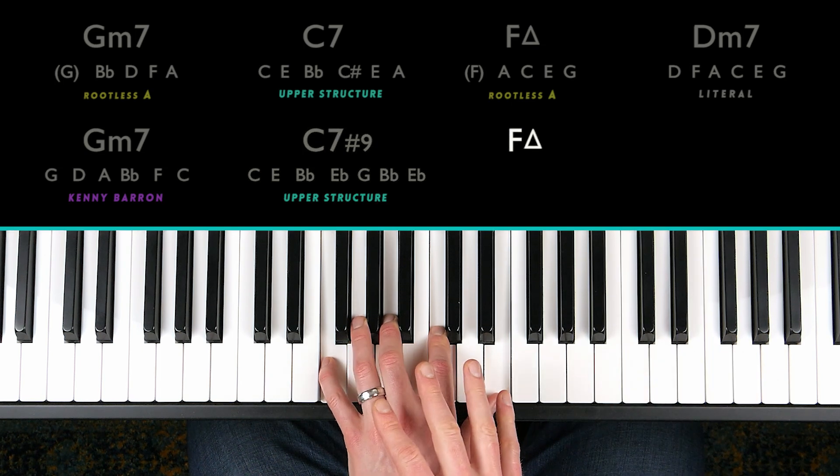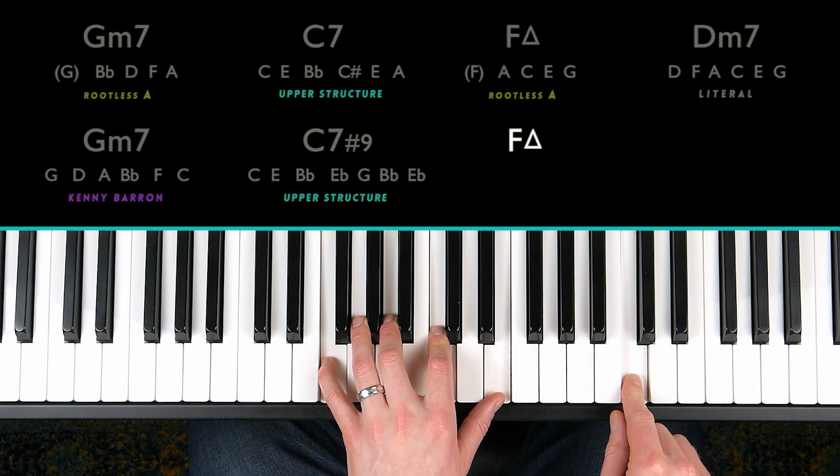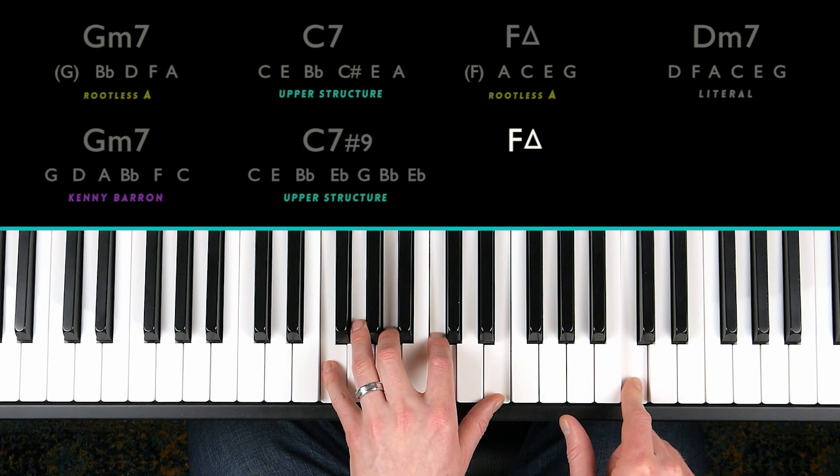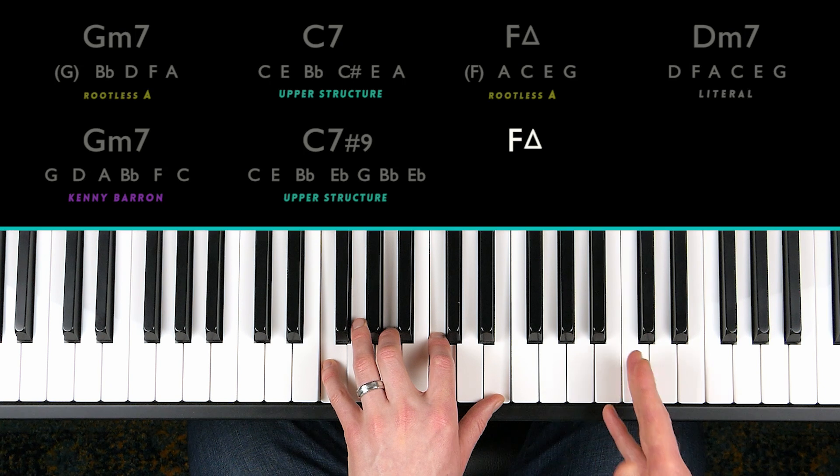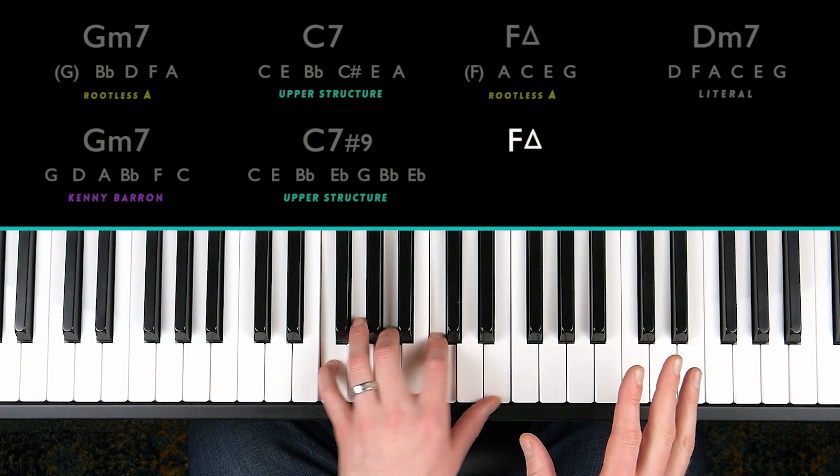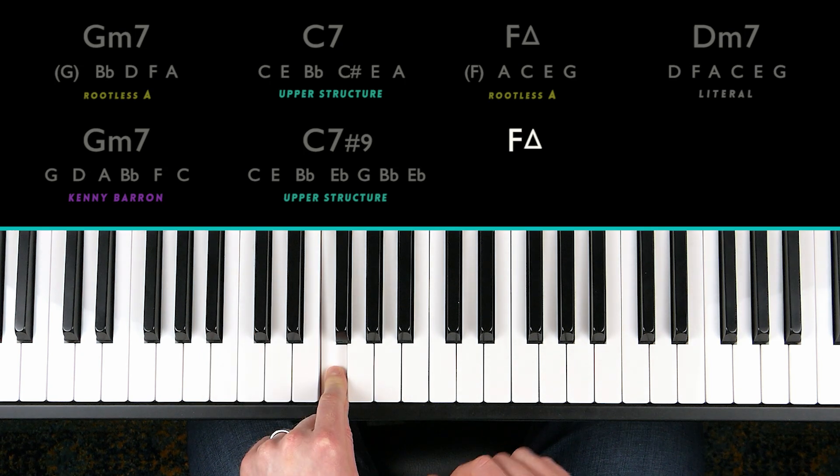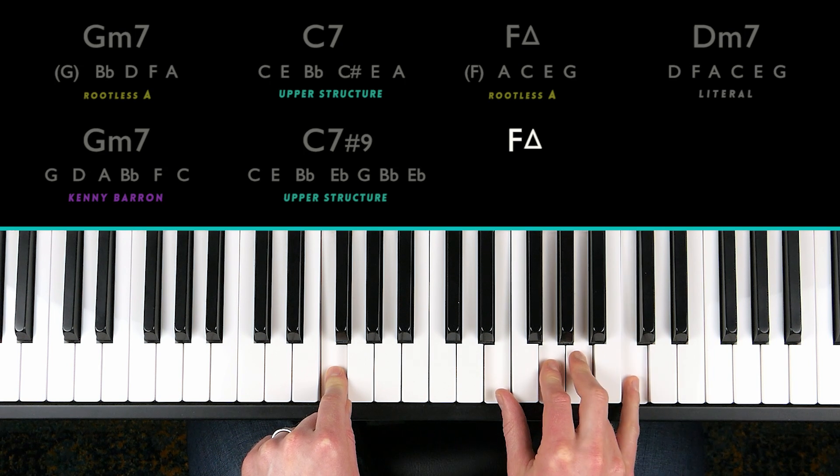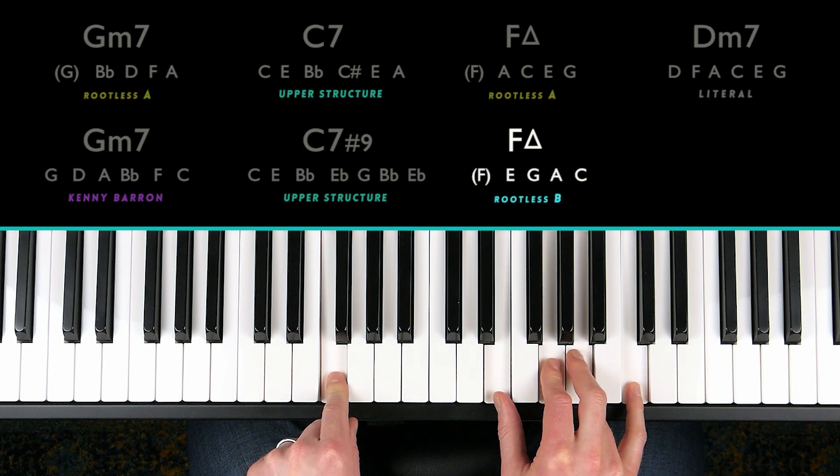And then we have an F major seven chord to end. The melody note is the fifth. Which voicing shall I play? Well, when the melody note is the fifth, we always have that rootless voicing. Position B has an option. So F, we're going to find the major seventh, find the ninth, major third, and fifth. That's always an option.